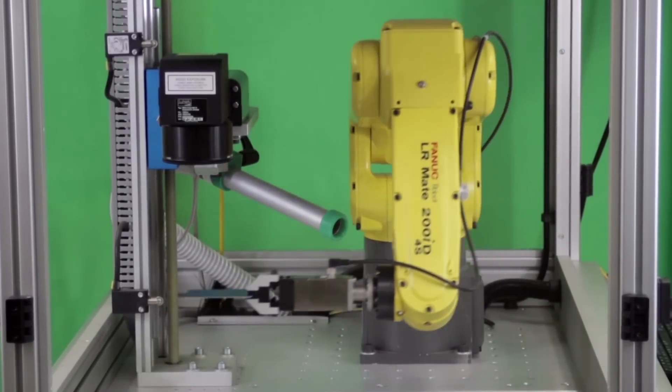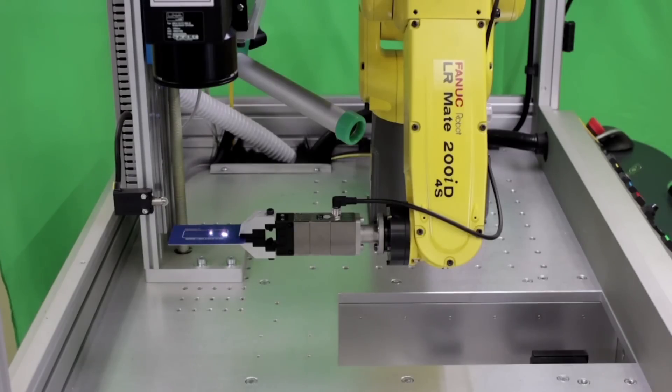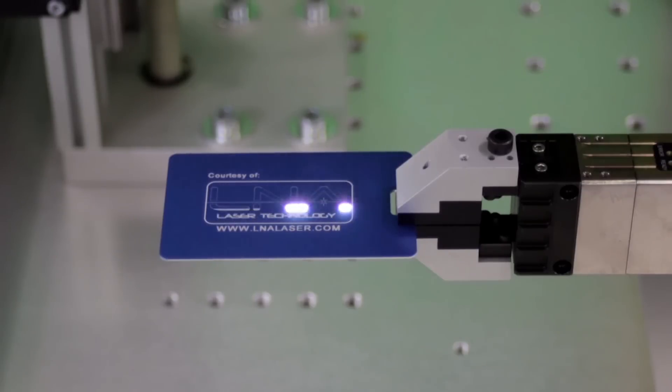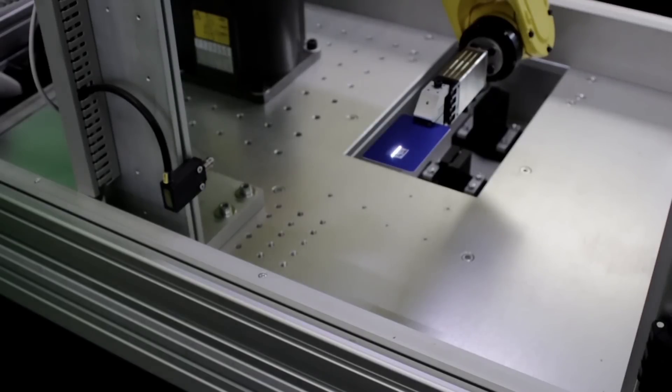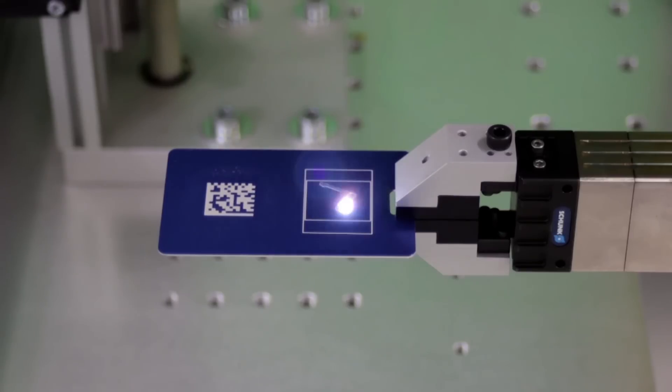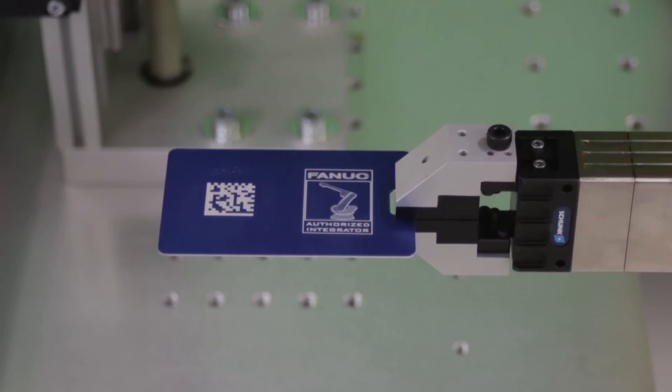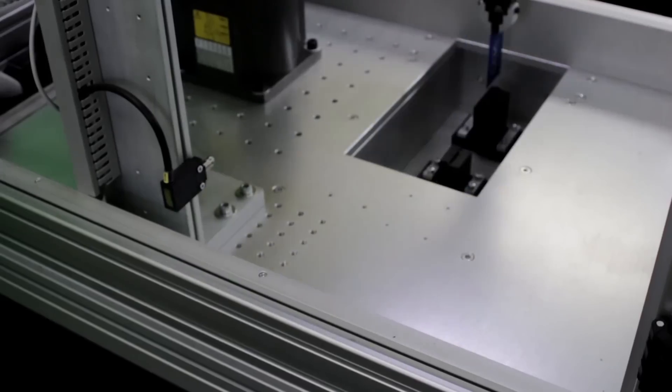The compact 6-axis FANUC LRMate 200ID 4S short-arm robot used in this system can be taught an unlimited number of routines to efficiently perform multiple tasks, regardless if the project is laser marking, welding, or cutting.